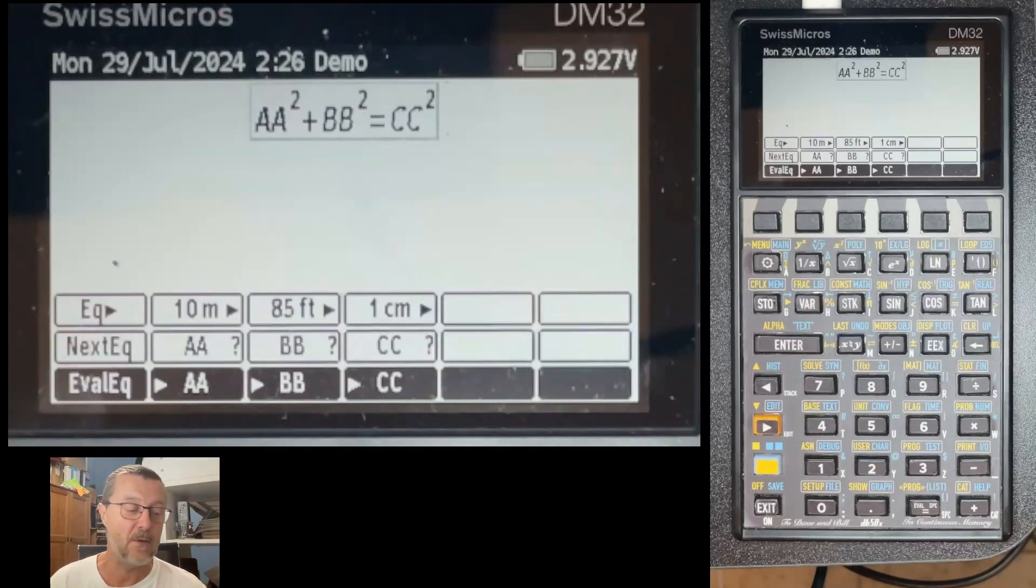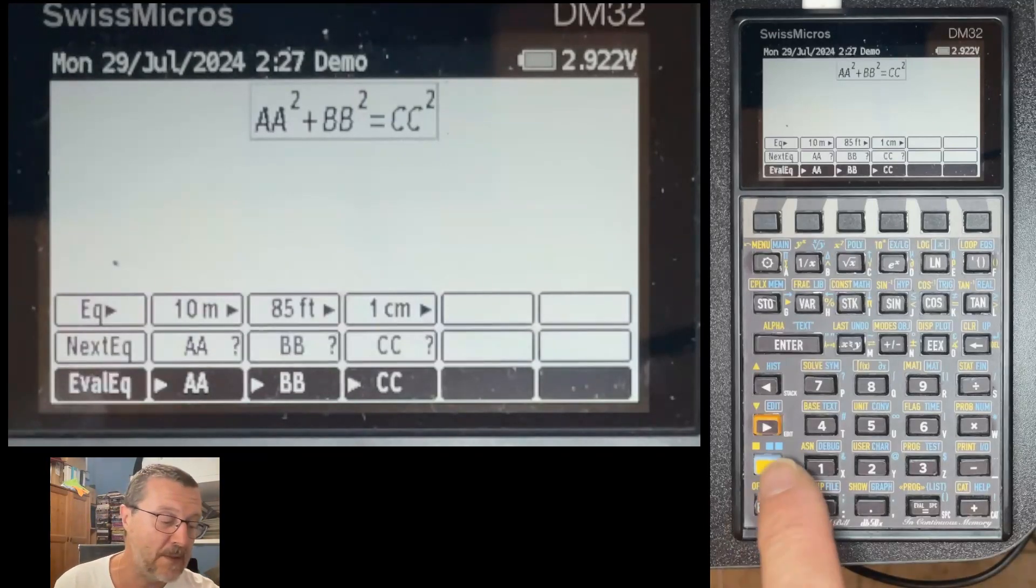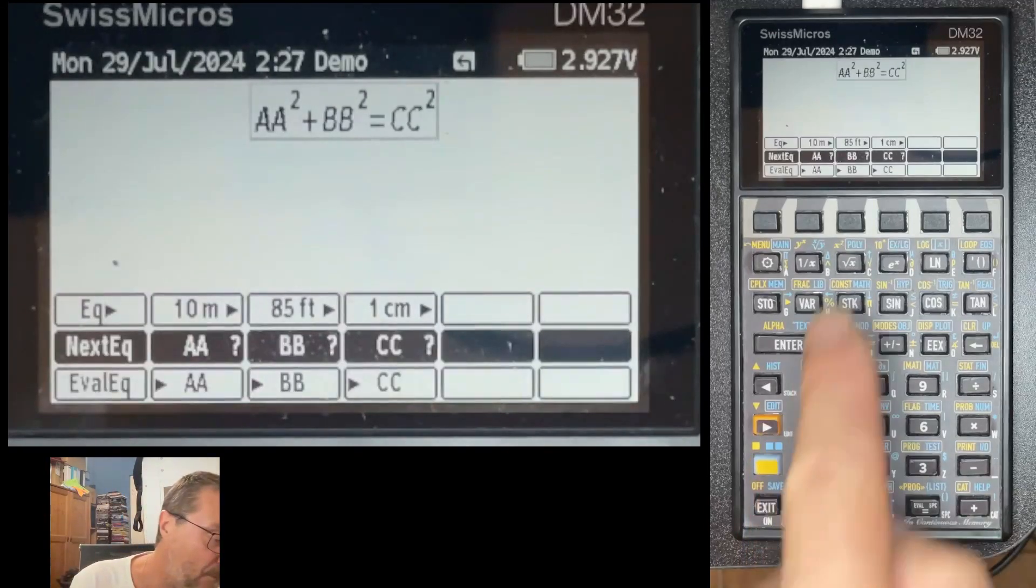You see that they contain units. That's one of the examples found in one of the user's manual of the HP 48. We used to have issues with that because it has different units for the various values. In that case, we have length units for all three, but we want to have a result in centimeters. We initialized CC with a value of one centimeter and we are going to solve for it.